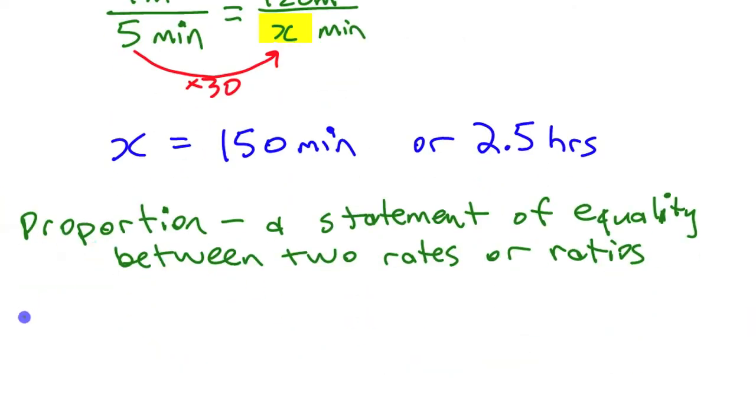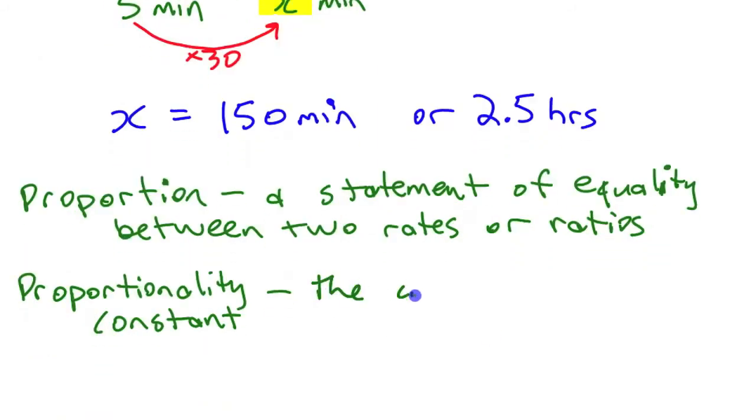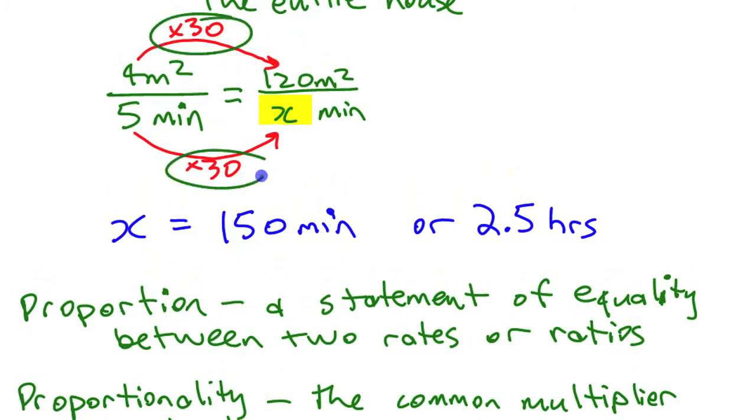And you can use what I was calling the proportionality constant. Proportionality constant is the number that multiplies this numerator to get this numerator, or this denominator to get this denominator. It's that common multiplier between the two rates or ratios in a proportion. If something's constant, it's always the same. So this number's the same. It's the same multiplier in the top and the bottom. That's why it's called a proportionality constant.